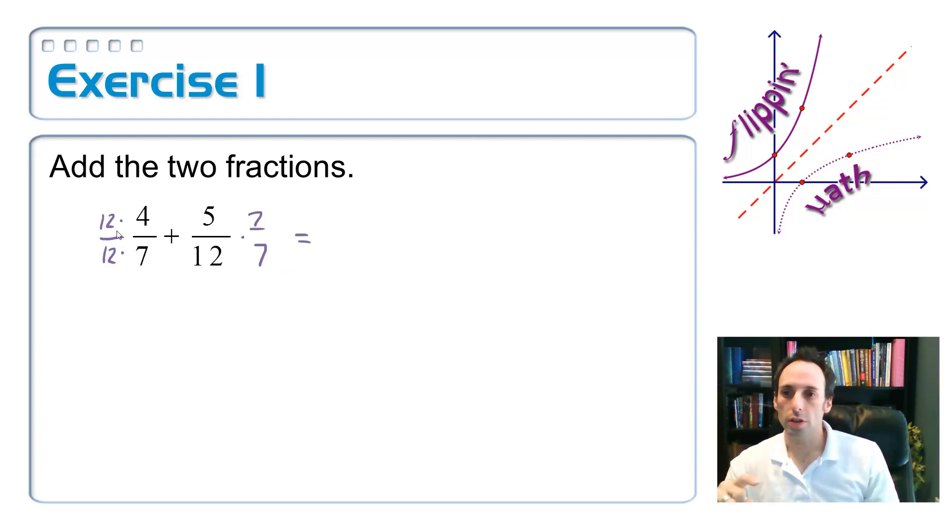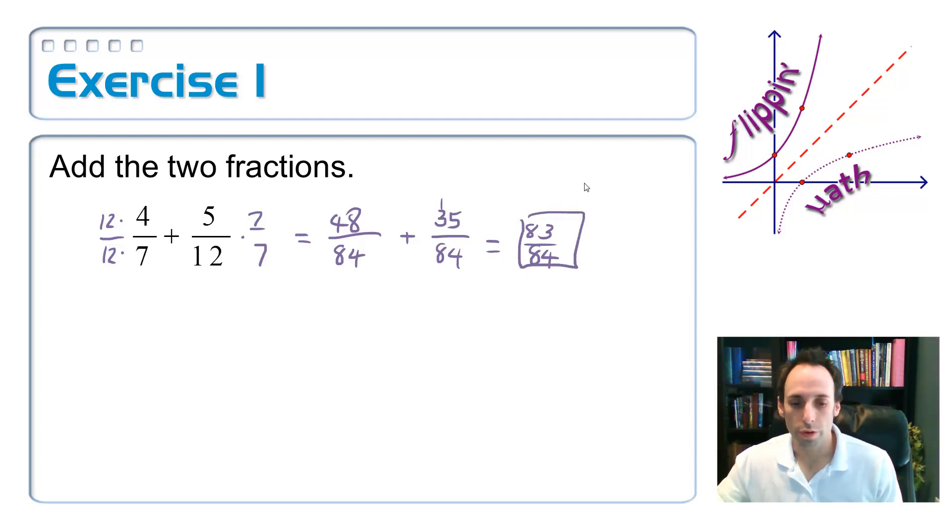So the first fraction here, 12 times 4 gives me 48 over, and then 12 times 7 is 84. Plus, multiply on the top on the other ones, I get 35 also over 84. Now my denominators are the same, so 84, and just add up the tops. I get 83 over 84.